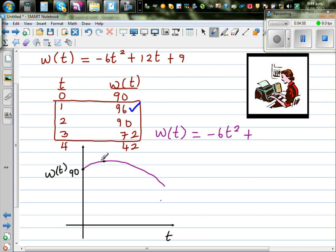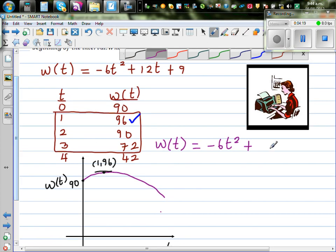This is one minute where you get the maximum speed. So this is one comma ninety six. So this is the function -6t² + 12t + 90.